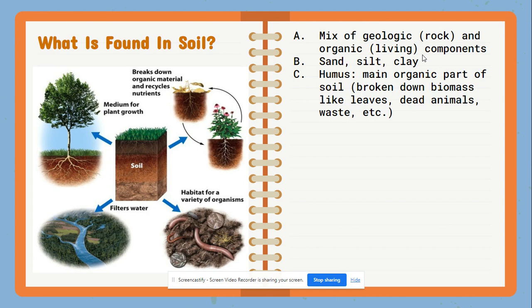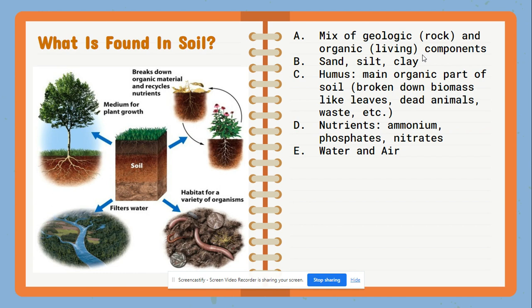The humus is where we see the greatest breakdown of biomass, such as leaves, twigs, or even dead animals and waste — all of that found on the upper layer of our soil. When we go deeper into the soil, we may find inorganic substances such as ammonium, phosphates, nitrates — thinking back to the nitrogen cycle and phosphorus cycle — all things that plants require for their survival. We even find water as well as air pockets within the soil too.